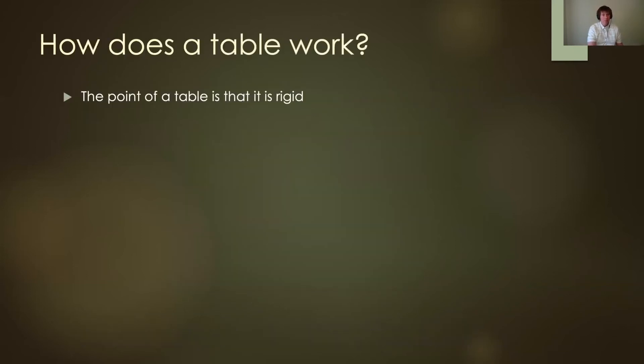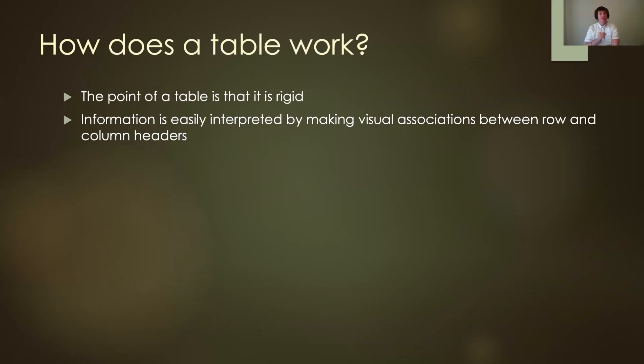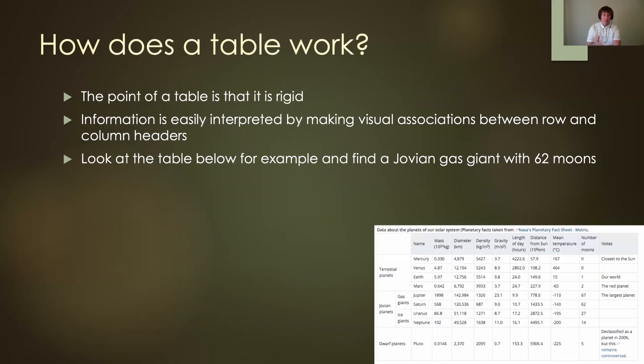But how does the table work? The point of a table is that it's rigid. Information is easily interpreted by making visual associations between rows and columns. Now look at the table below. I'm going to show an example. Let's say I want to find out the number of moons on Jovian. I can go over here, look up Jovian. I have gas giants, ice giants,